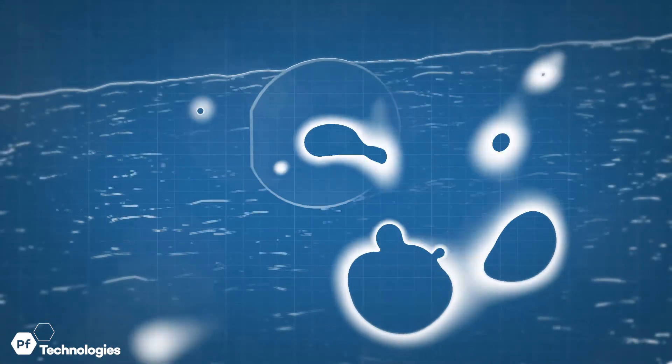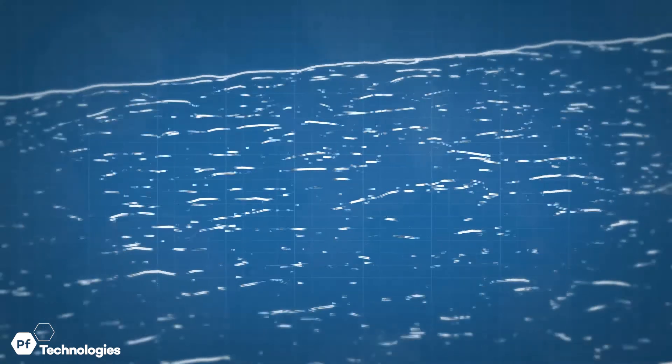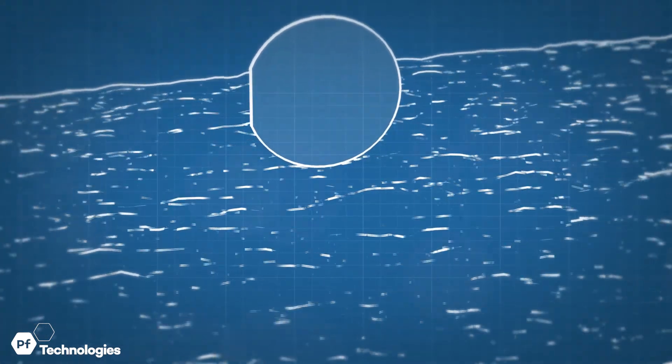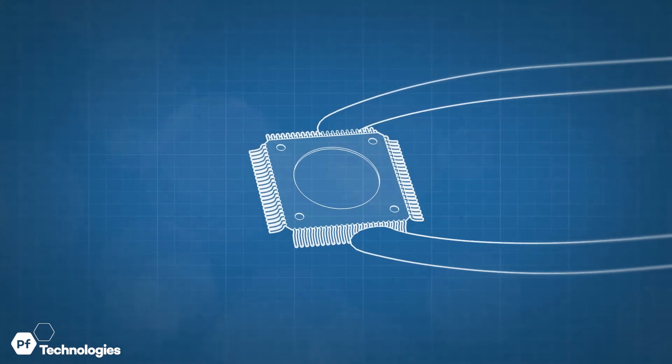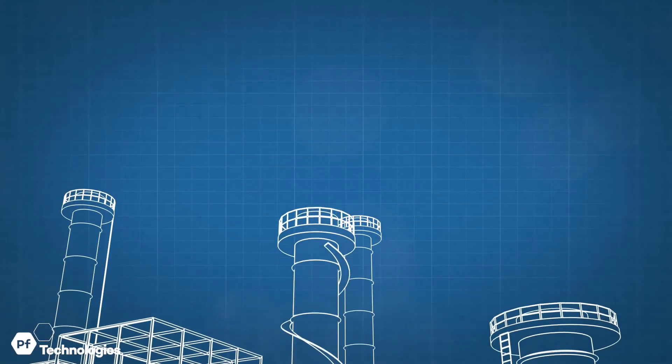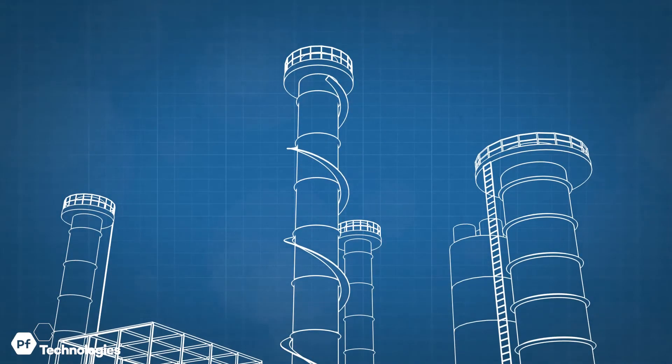Computer advances demand ever-purer chemicals. Edlon products are there in every step, from bare silicon to final chip. We fabricate the fluoropolymer line columns that make the ultra-pure chemicals.